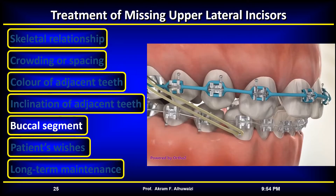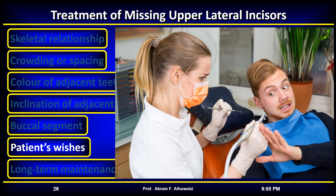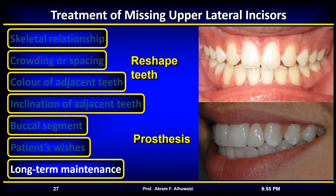Regarding the buccal segment, if it is Class 1, protracting the molars to close the space will convert the Class 1 molar relationship into Class 2, so it may be advisable to keep the space. The patient's wishes and ability to cooperate are also important, as is whether they wish the space closed or open for prosthetic replacement, and finally the long-term maintenance and replacement costs of the prosthesis.